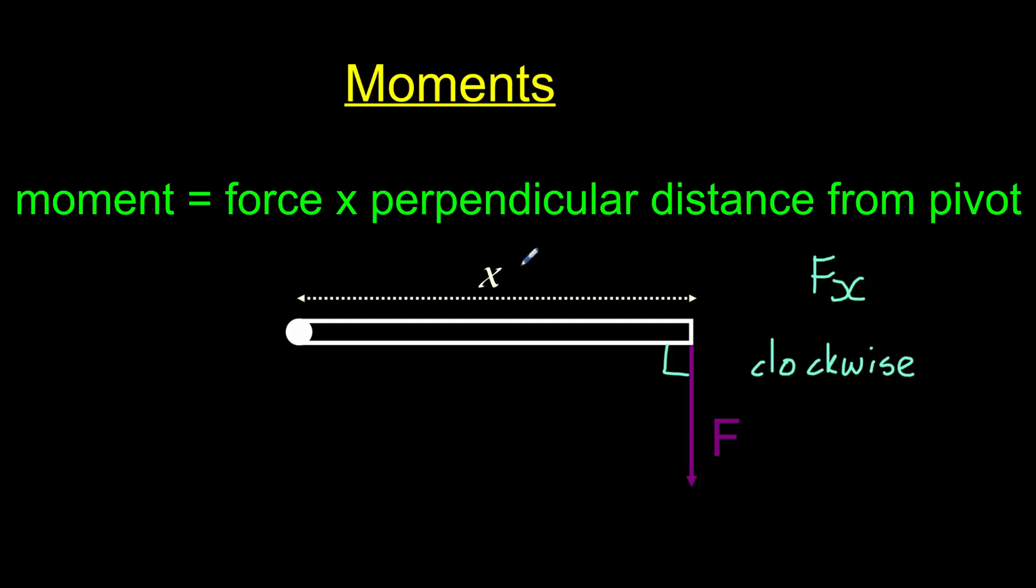For example, if X was 2 metres and F was 10 newtons, this would give us a moment of 10 newtons multiplied by 2 metres, giving us 20 newton metres.